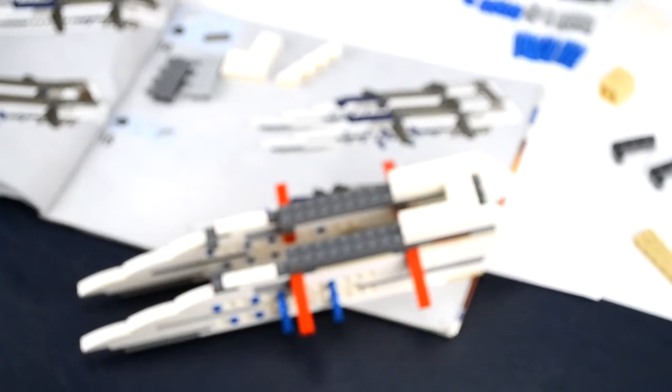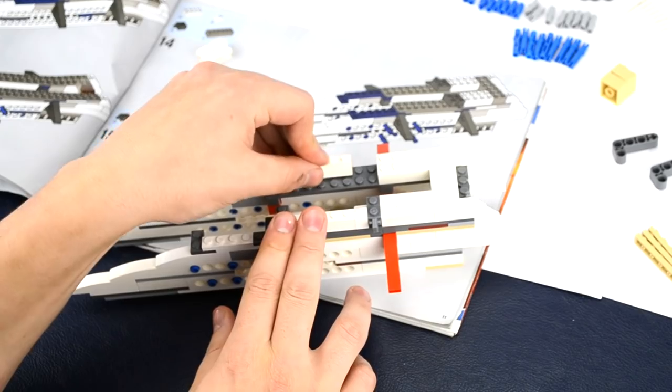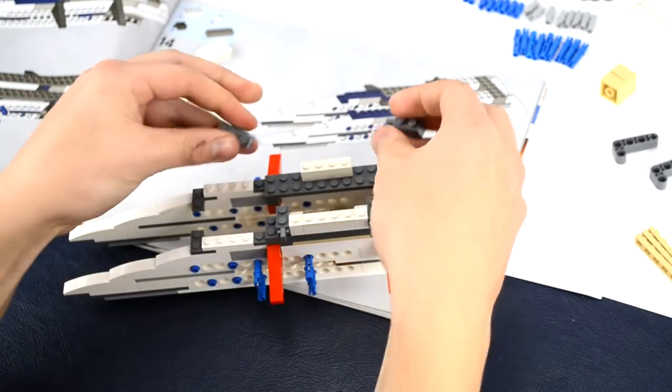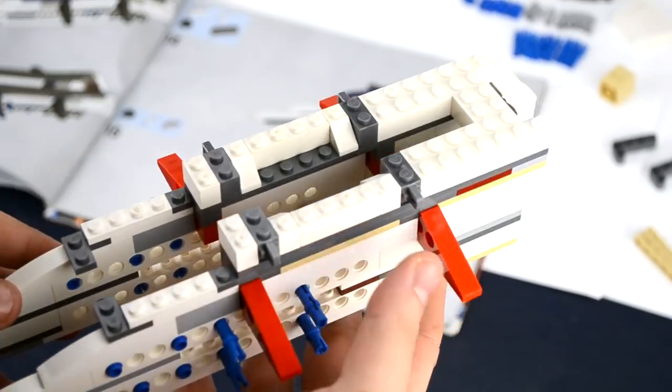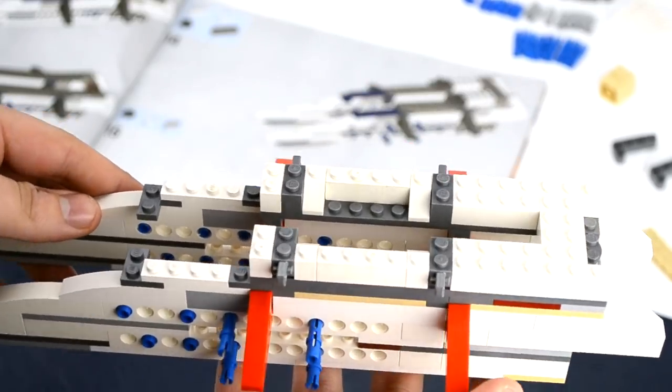On page 11 we will have to replace the 2x2 connectors with the 1x2 connectors from the gunship and add some 1x2 bricks.